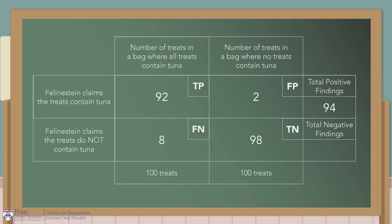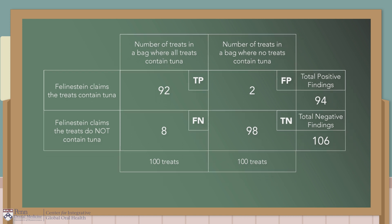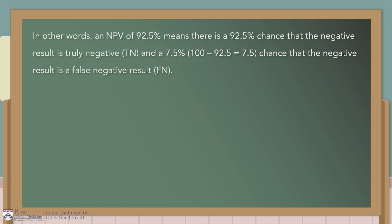Similarly, if a bag of 100 treats doesn't contain tuna, 98 out of the 100 treats are true negative findings. And if the bag of treats does contain tuna, 8 out of 100 treats will be negative results — false negative findings. All in all, a chance of getting 106 (98 plus 8 equals 106) negative results. But only 98 out of 106, or 98 over 106 times 100, equals approximately 92.5% of these findings are truly negative findings. An NPV of 92.5% means there is a 92.5% chance that the negative result is truly negative, and a 7.5% (100 minus 92.5%) chance that a negative result is a false negative result.